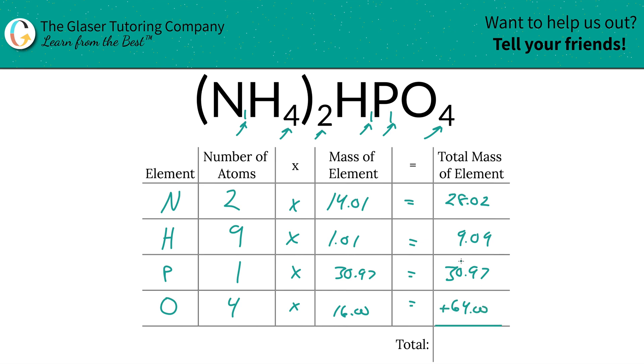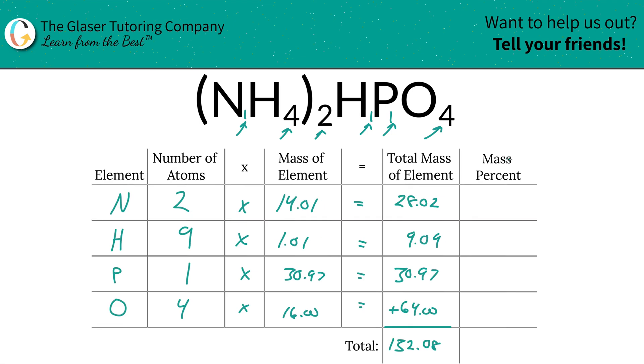Now, add this column on up to find the total mass of the entire thing, the whole shebang. So this is going to be 132, 132.08. And there you have it. That's the total mass of the compound. That was the first step of the process. Now to find those mass percents, I'm going to add a column to the table, and it's going to be easy as pie doing the rest.